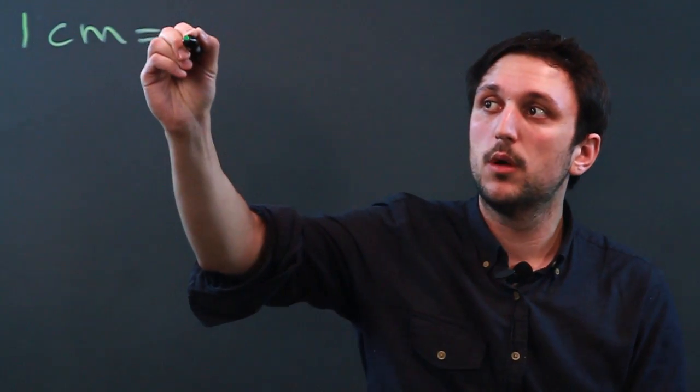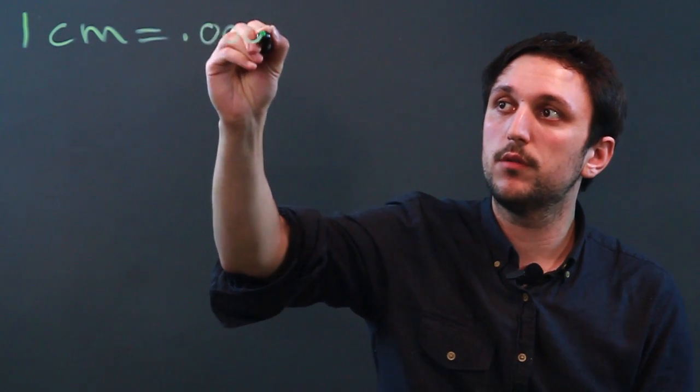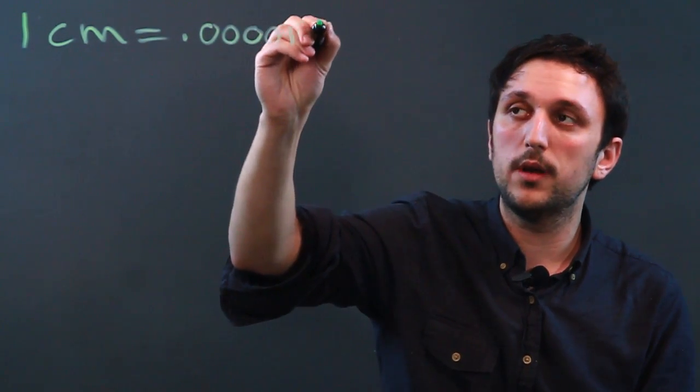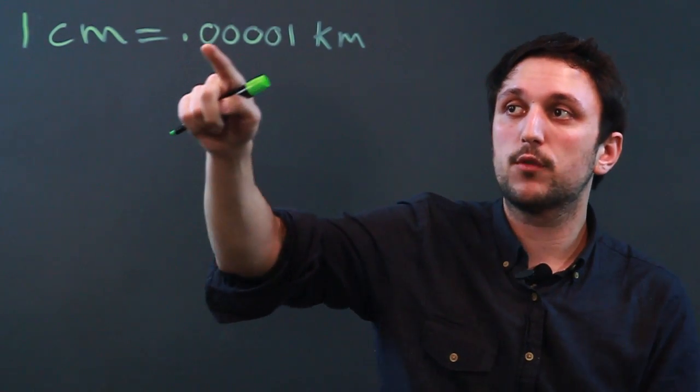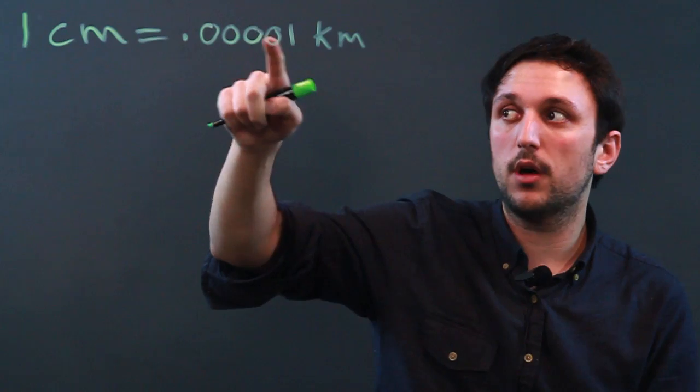So first let's look at the bases, centimeter and kilometer. One centimeter equals .0001 kilometer. Now that's one one hundred thousandth of a kilometer.